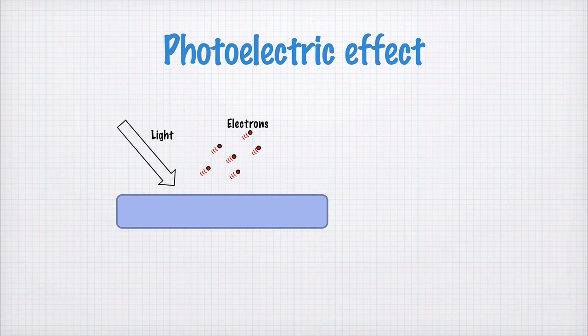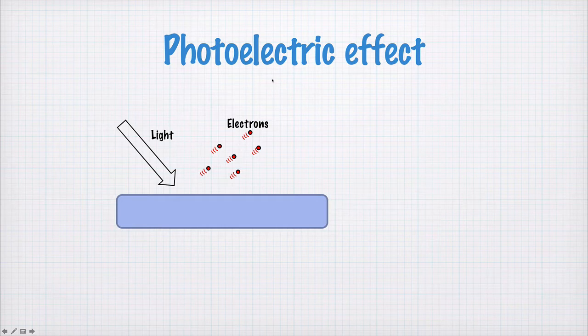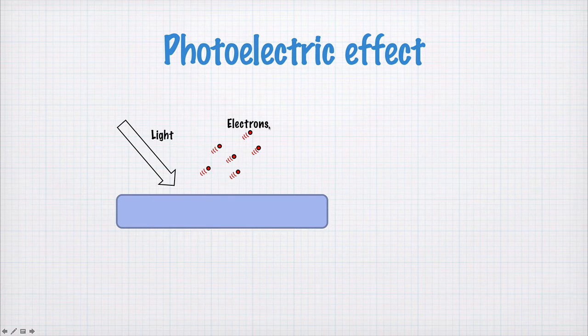Now the second piece of really important historical evidence comes from something called the photoelectric effect. In this experiment, light is shone at the surface of a metal and electrons can be ejected.